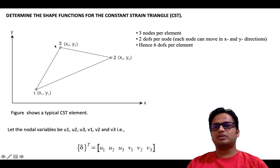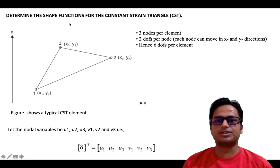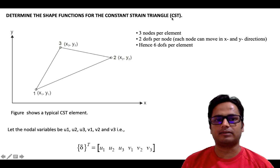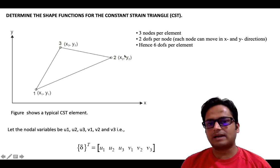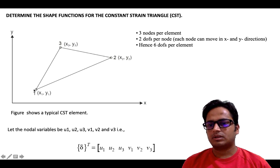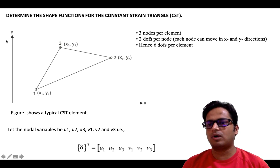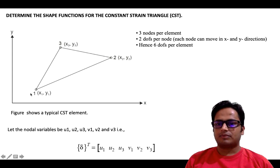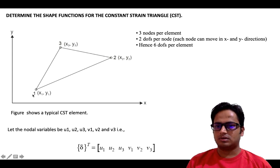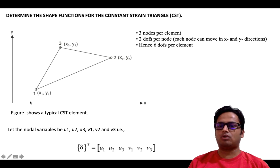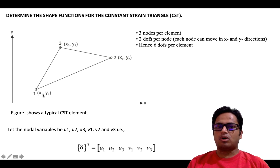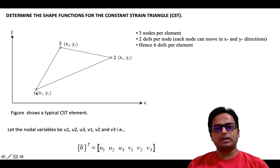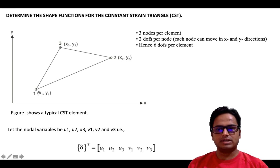Hello friends, today we will see the derivation for shape function of a constant strain triangle. This is our constant strain triangle with two coordinate axes, x and y. Since this is a 2D element, we have three nodes — node number 1, 2, and 3 — at the three corners of the triangle. At each corner we have two degrees of freedom: one in the vertical direction represented by V and one in the horizontal direction represented by U.